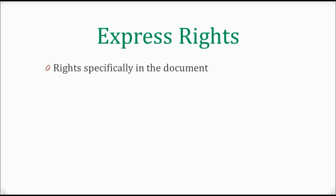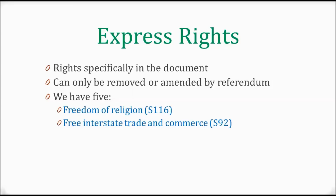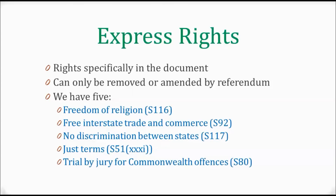Express rights, or entrenched rights, are rights that are specifically written in the Constitution. They can only be removed or changed by a referendum, so they're very well protected. We actually have five express rights in our Constitution: freedom of religion, free interstate trade and commerce, no discrimination between states, the acquisition of property on just terms, and trial by jury for Commonwealth offences.